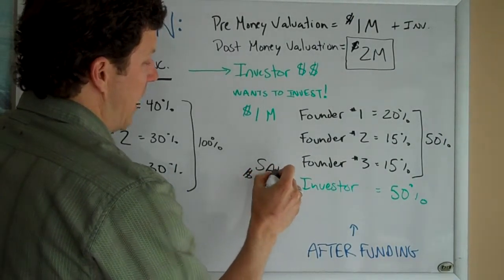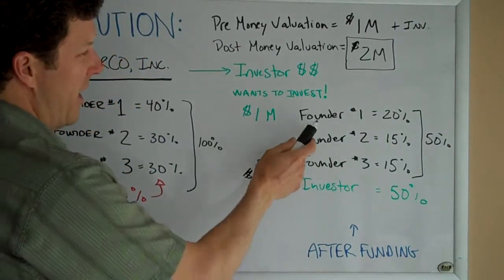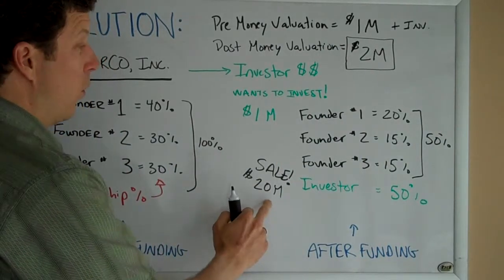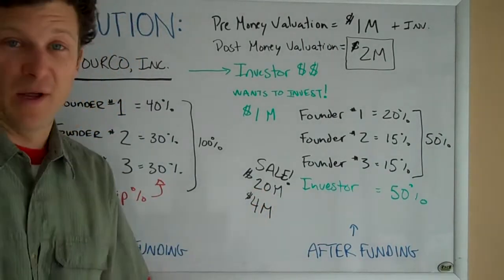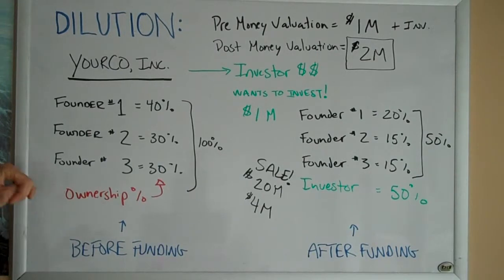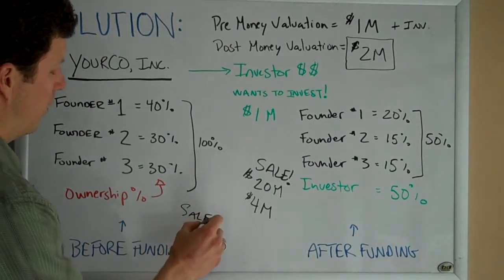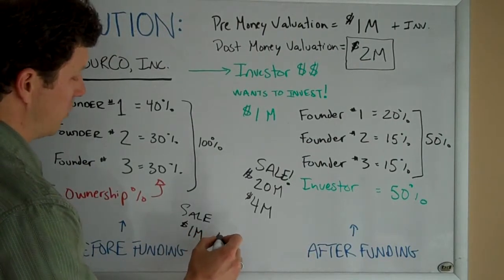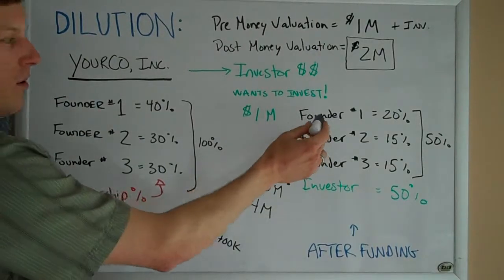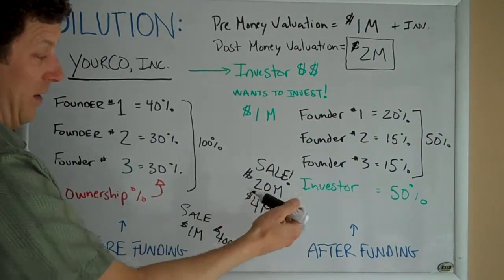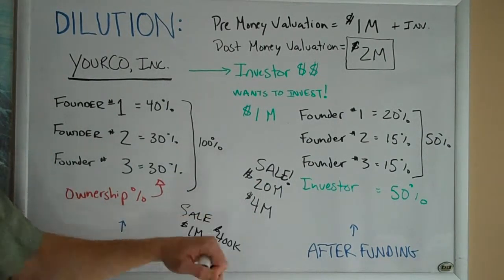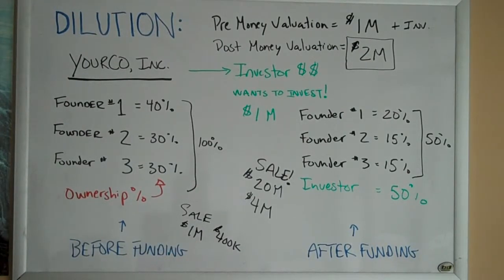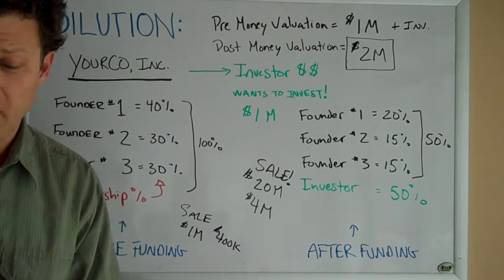Let's say you sell this company for twenty million dollars — that would be a very good outcome. In that case, founder number one owning 20% would make four million dollars. However, if you did not raise funding and your company struggles to grow because you didn't have enough capital, and you sell for a million dollars, founder number one owning 40% would only make 400 thousand dollars. Even though the founder owned a much larger percentage, the worse outcome means a much smaller payoff.